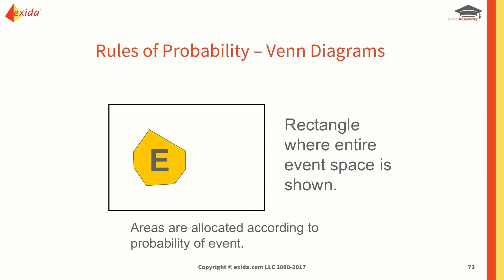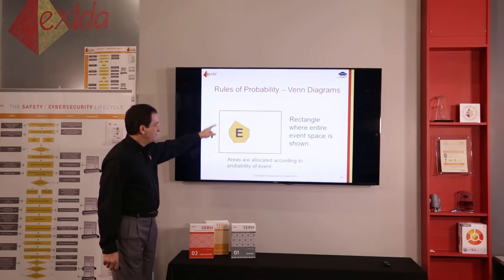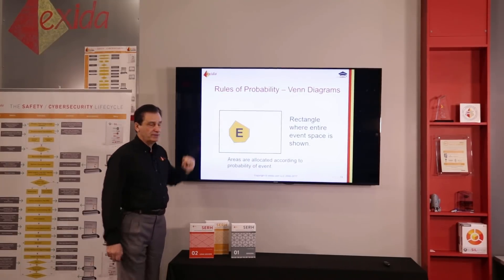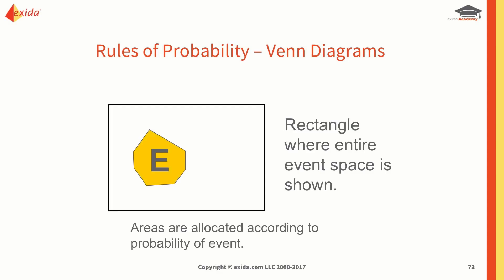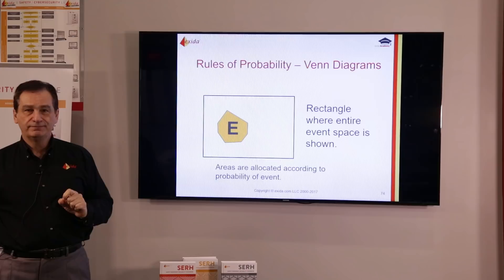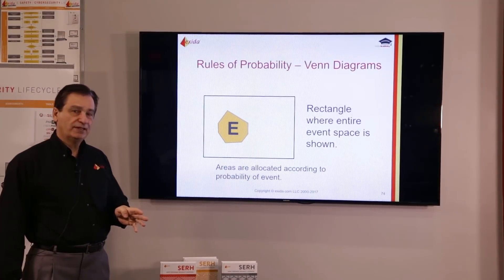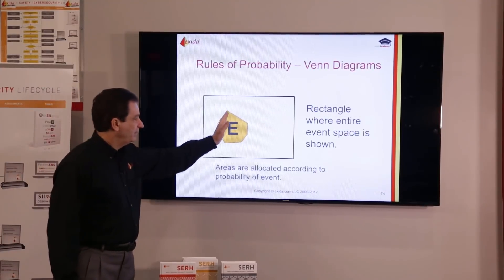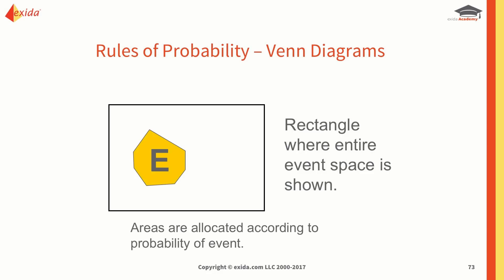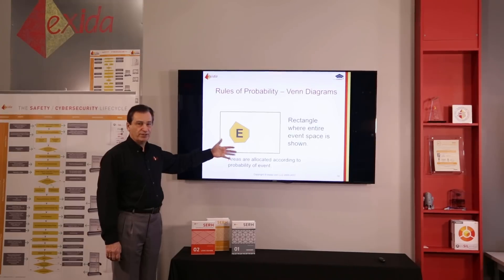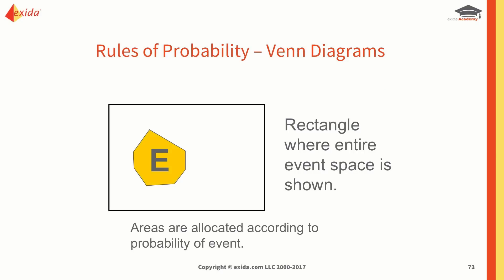Venn diagrams are useful because they give you a visual representation of probability. Venn was a mathematician who came up with this concept where the entire event space is represented by a rectangle and the areas are allocated according to the probability of the event. For example, if we were looking at a coin toss and assumed 50-50, this would be split in two showing heads and tails. The limitation of Venn diagrams is that we don't know what the assumptions are — we're given a visual representation but we don't know how we got there.